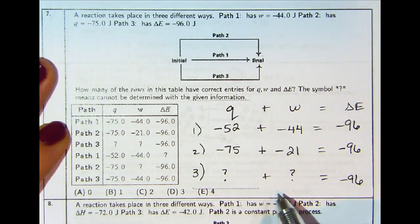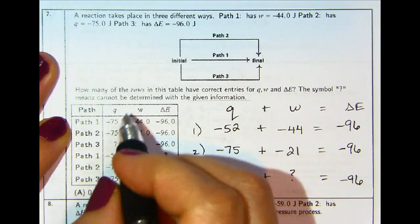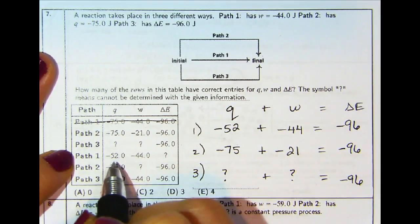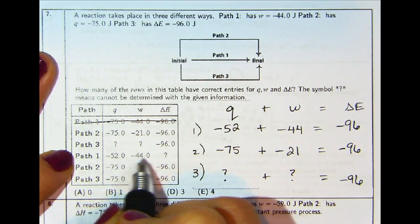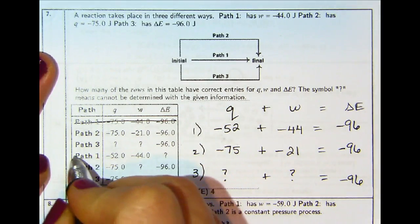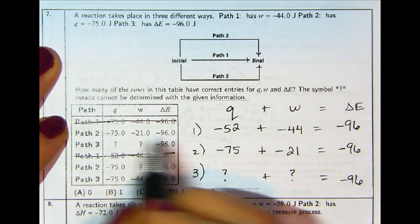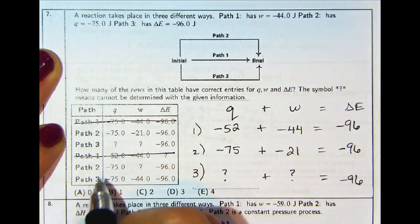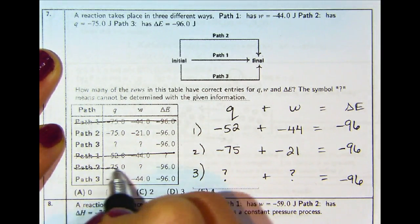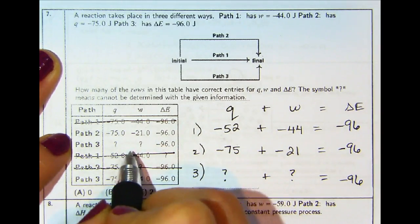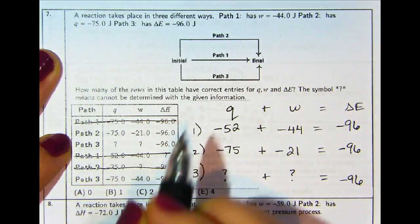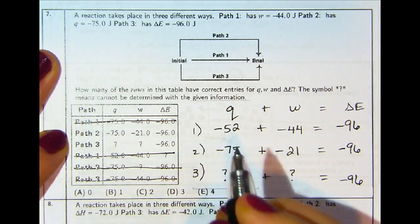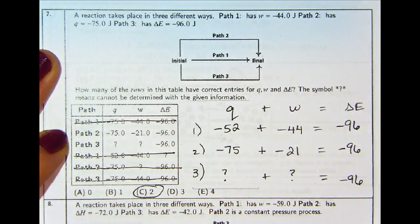For path one: Q is negative 52, W is negative 44, delta E is negative 96. For path two: Q is negative 75, W is negative 21, delta E is negative 96 — this one is true, we do know all three values. For path three: we don't know Q or W, but we do know delta E is negative 96. So paths two and three are correct.